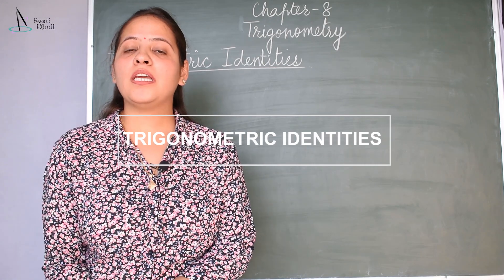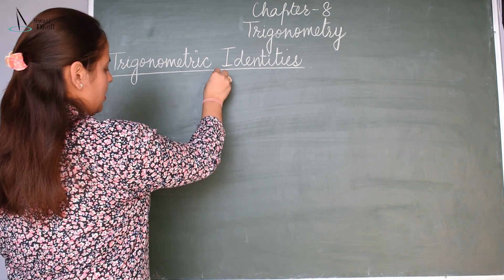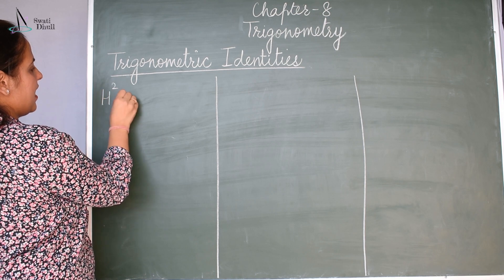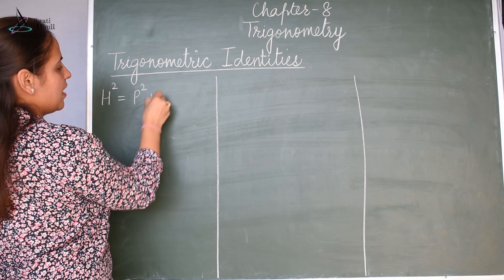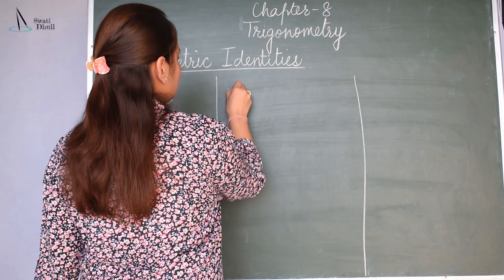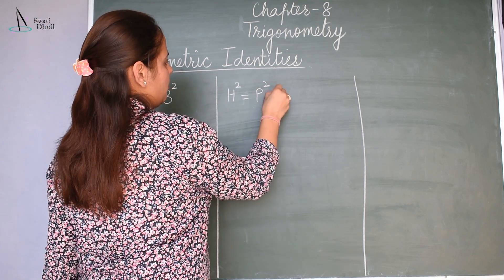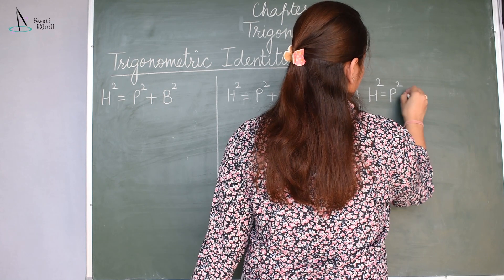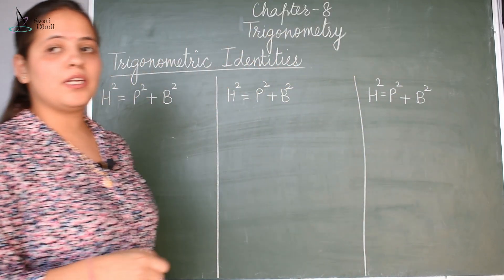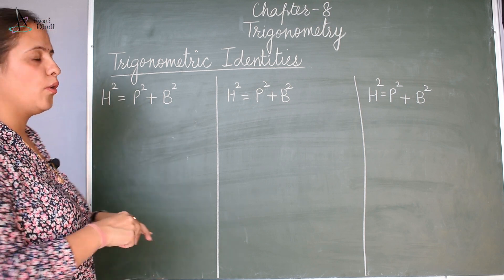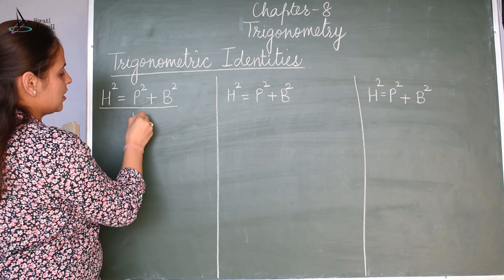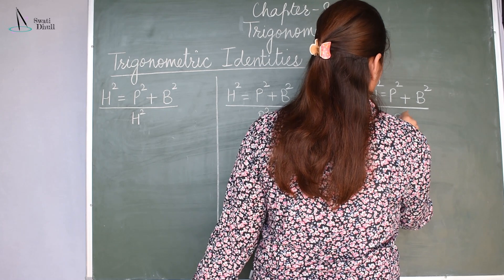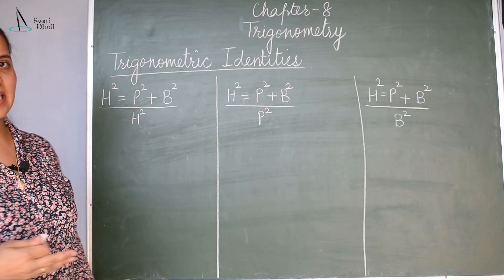There are three trigonometric identities. We have the Pythagorean theorem: H square is equal to P square plus B square. Now there are three parameters H, P, and B. What we will do is divide first by H square, next by P square, and next by B square. We will derive three identities out of it.